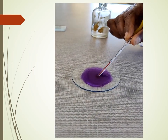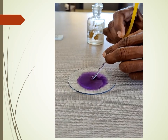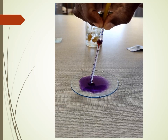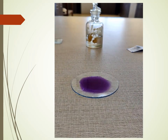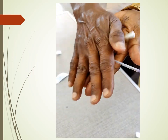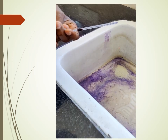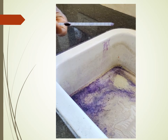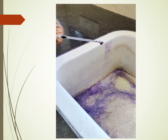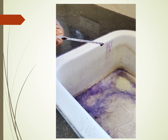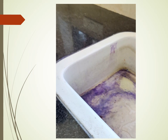Wipe out the pipette tip, then dilute the blood by sucking the WBC diluting fluid up to the 11 mark. Mix by rotating the pipette horizontally between the palms. Then discard the first 2 to 3 drops from the pipette, holding it in an inclined position.